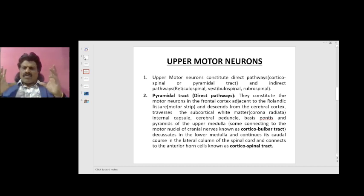The pyramidal tract, the direct pathways, they constitute the motor neurons in the frontal cortex adjacent to the Rolandic fissure, that is the motor strip, and descend from the cerebral cortex, traverse the subcortical white matter known as corona radiata, then go to internal capsule, cerebral peduncle of midbrain, basis pontis of pons, and pyramids of the upper medulla. Some connect to the motor nuclei of the cranial nerves, known as the corticobulbar tract.